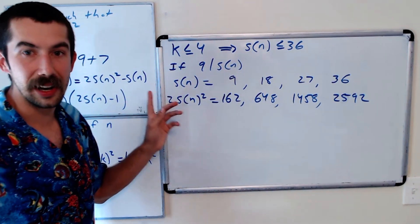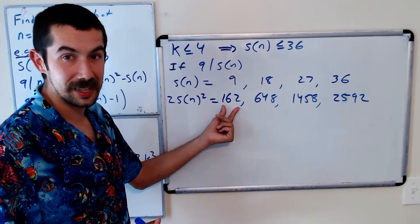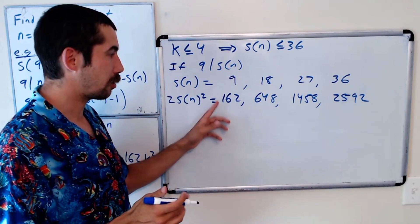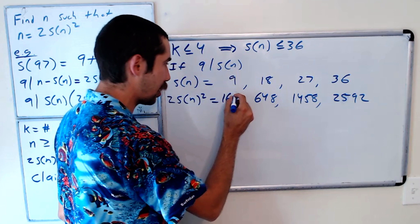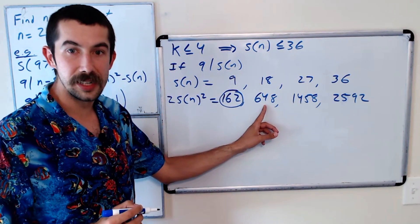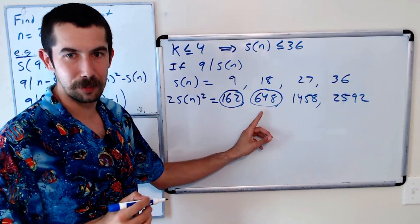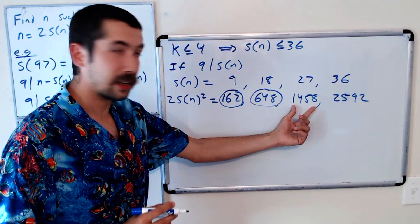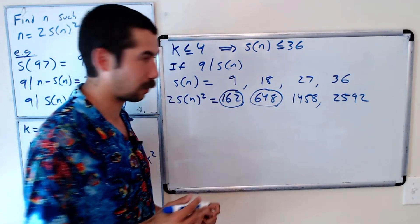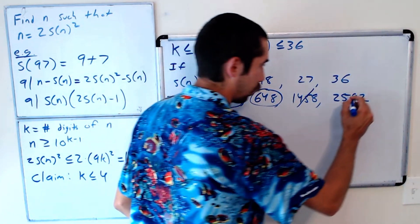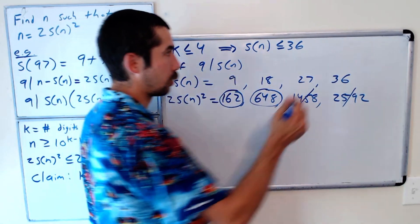These are candidates for n, so these are candidates for the solution of our problem. So we just want to check. If n were equal to 162, is it the case that if you take the sum of its digits, square it, and multiply it by 2, you get back to where you start? Well, let's see. 162, the sum of those digits is 9, square it, multiply it by 2, you get back to 162. So this is a solution to the problem. 648, the sum of the digits is 18, square it, multiply it by 2, you get 648. So that's another solution to the problem. 1458, if you take the sum of the digits, you get 18, square it, multiply it by 2, you get 648. So you do not get back to what you start with, and you could check that you do not get back with what you start with for this one either. So in this case of the 9 divides S(n), we have two solutions.